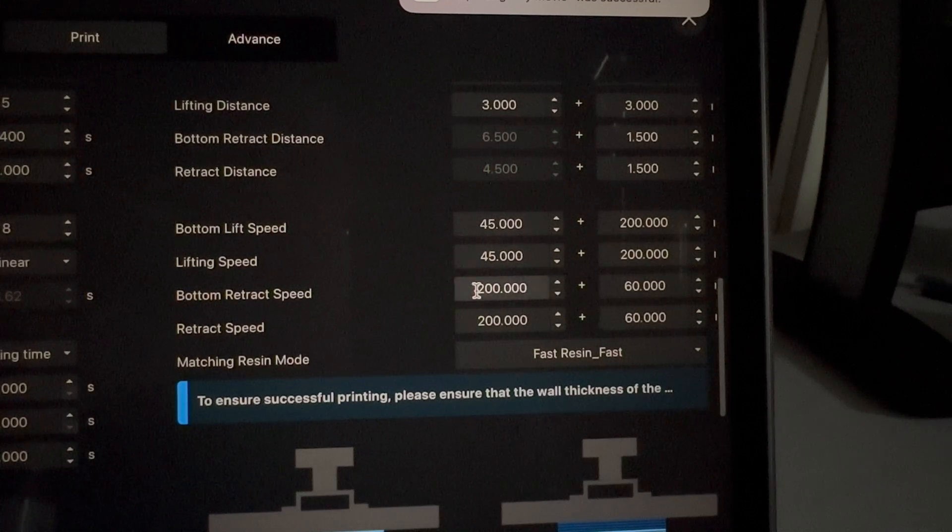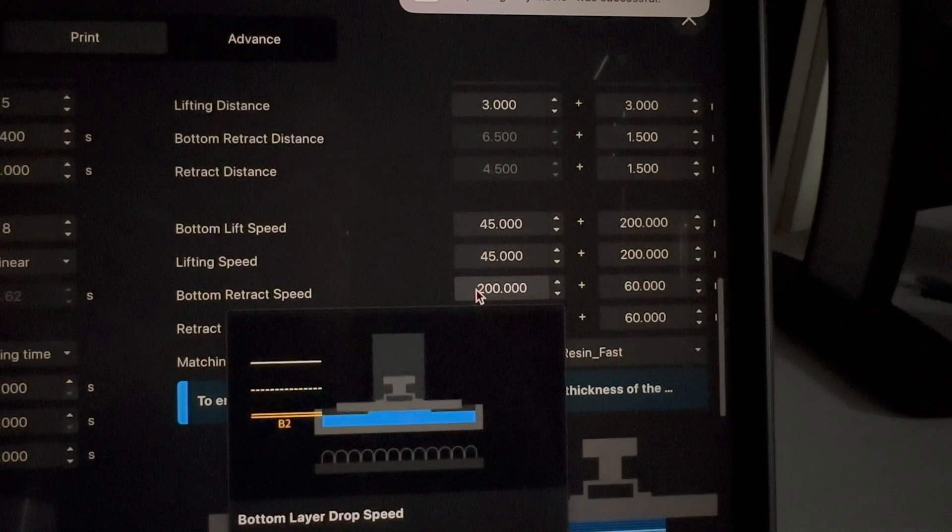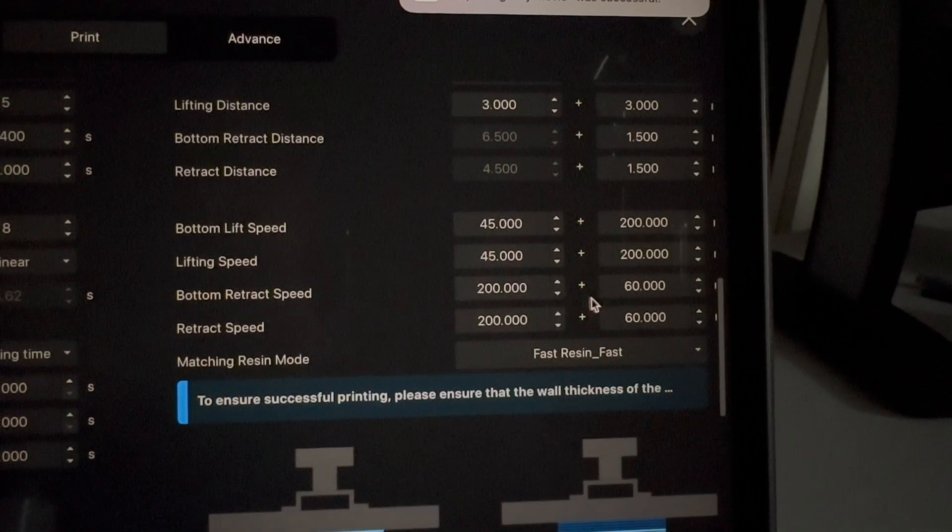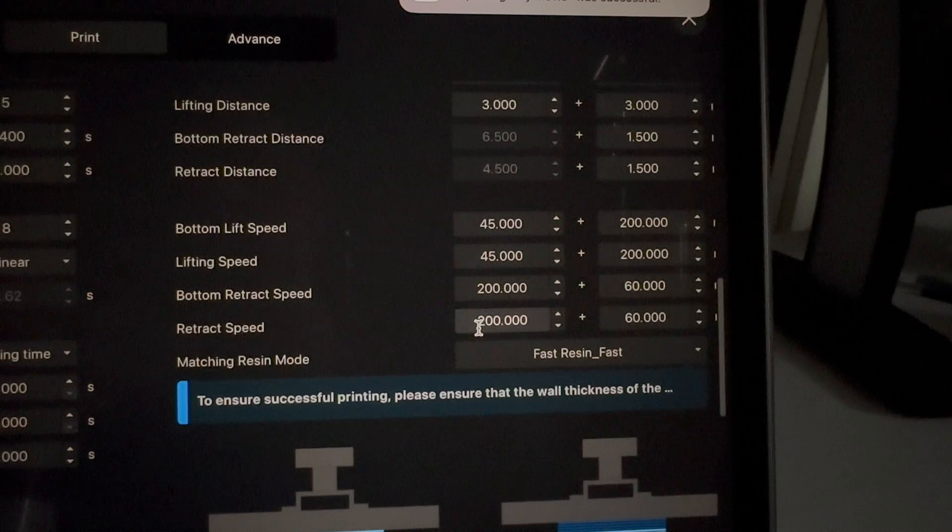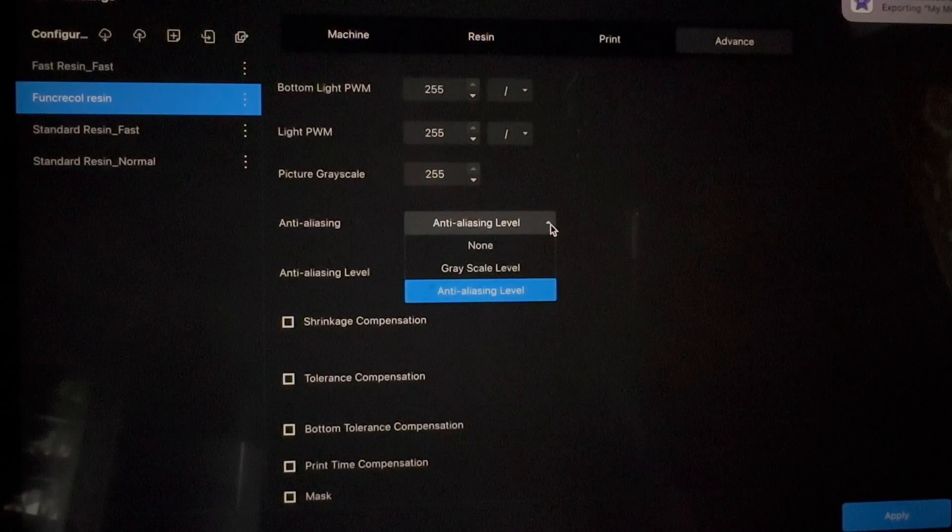Bottom retract speed which is going in the opposite direction. We're going to go fast and then slow down to 60. Fast go down to 60.